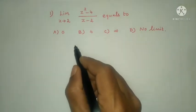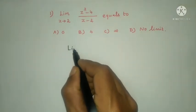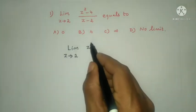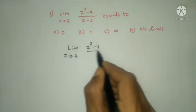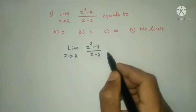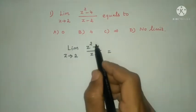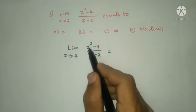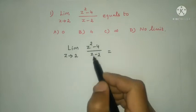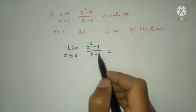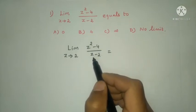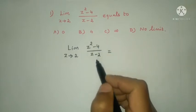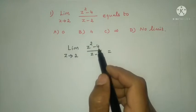For the first question, limit z tends to 2 of z squared minus 4 divided by z minus 2. If z tends to 2, substitute z = 2: numerator gives 2 squared minus 4 = 0, denominator gives 2 minus 2 = 0. This is a 0/0 indeterminate form.